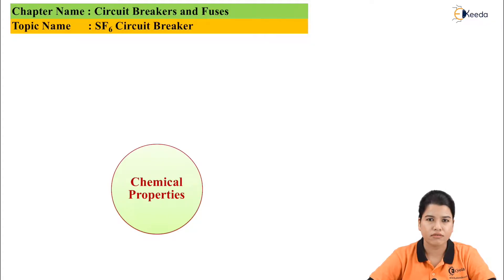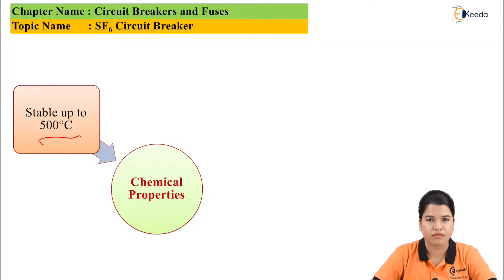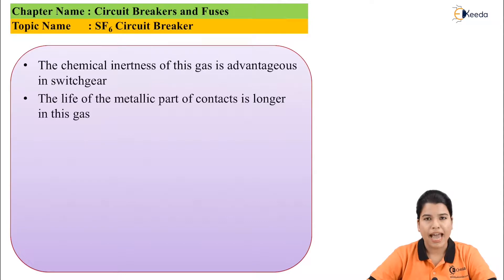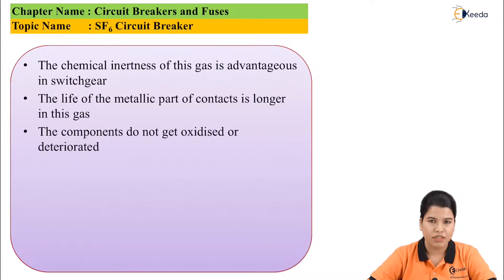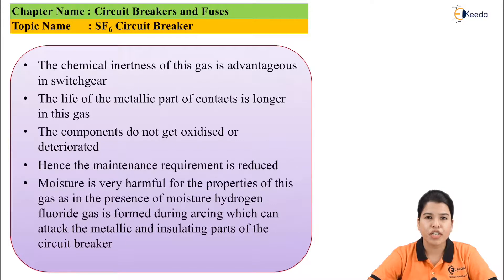Now let us see the chemical properties of SF6 gas. SF6 gas is highly stable up to a temperature of 500 degrees centigrade. It is also an inert gas, and its chemical inertness is very advantageous in switchgear applications. Because the gas is inert, the life of the metallic parts contained in the circuit breaker is very large and the components do not get oxidized. Due to all these properties, the maintenance required for the SF6 circuit breaker is very low. However, moisture if present is very harmful for SF6 gas, so the circuit breaker must be protected from moisture at all times.